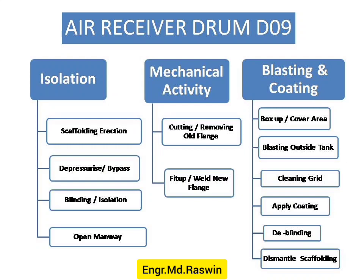For the whole drum. Based on the scope of work, we have divided the work into three WBS: isolation, mechanical activity, and blasting and coating. Each WBS is further divided into different activities. You can see the activities on screen. We are going to create WBS, which is Work Breakdown Structure, and activities based on the chart displayed here.